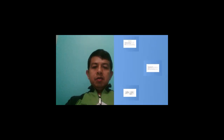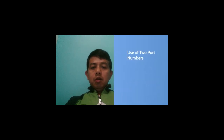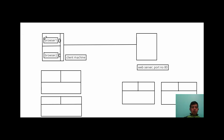To achieve multiplexing and demultiplexing using port numbers, we use two port numbers instead of one. Let's understand this with an example. We have a client machine where two browsers are running, and we have a web server. Because this is a web server, web applications are identified by port number 80.